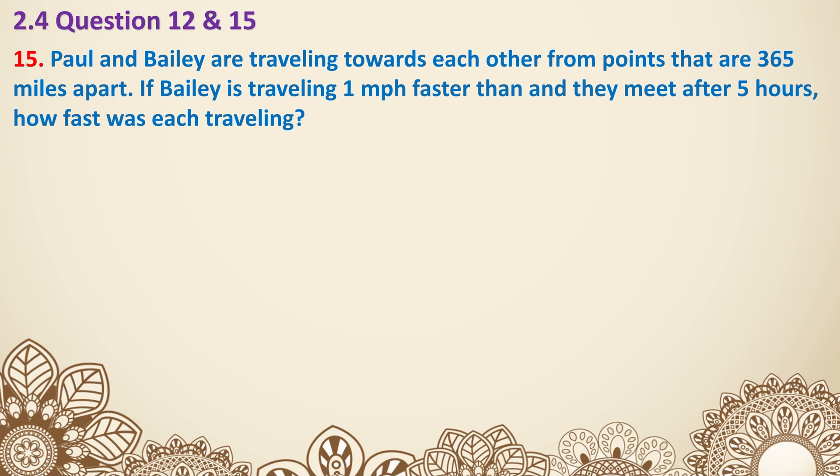Paul and Bailey are traveling towards each other from points that are 365 miles apart. So it's a very similar situation as the previous one. If Bailey is traveling one mile per hour faster than Paul, and they meet after five hours, how fast was each traveling? So we have Paul and Bailey. Bailey is the one that's traveling faster. So I'm going to actually set Paul to be our normal speed s. And Bailey, in that case, since Bailey is faster, it will be s plus one.